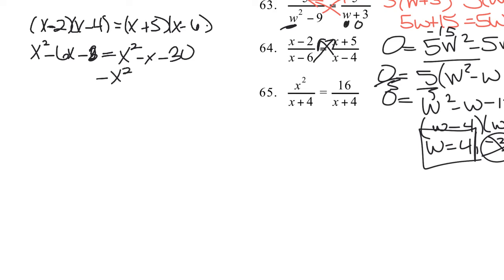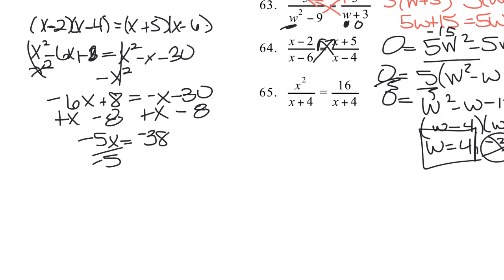Now I'll subtract my x squared, so that's going to cancel those out. So I have negative 6x plus 8 equals negative x minus 30. And I can add x, and this becomes minus 8. And I can subtract 8 now, so negative 5x equals negative 38. Divide by negative 5, and x equals positive 38 fifths.